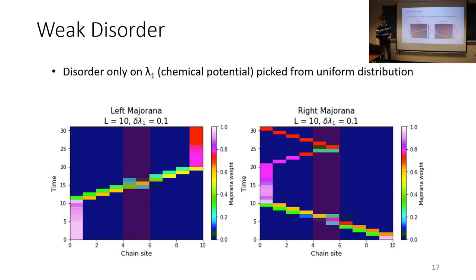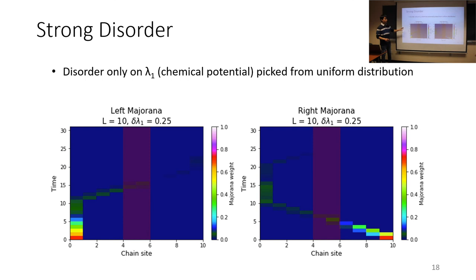If we ramp up the amount of disorder that we have, let's say twice as much or three times as much, then the braiding protocol breaks completely. So we can see that as halfway through the protocol, everything sort of breaks down and the Majorana wave functions get washed out and they go into the bulk.